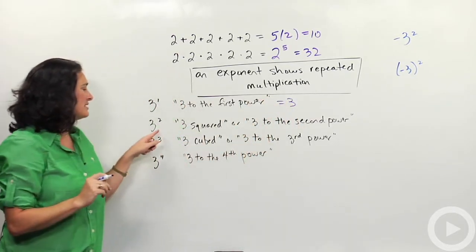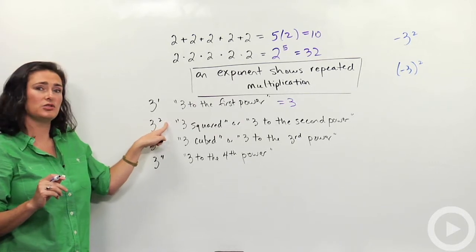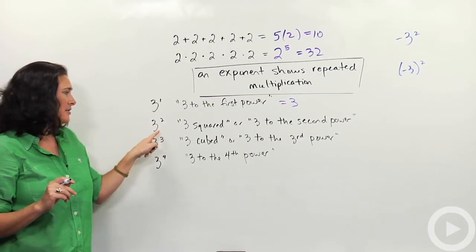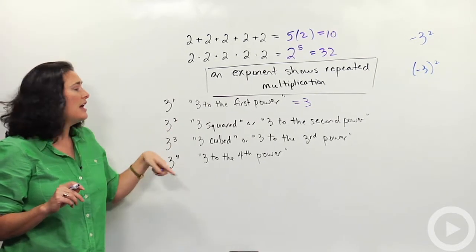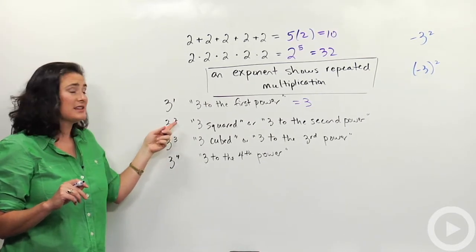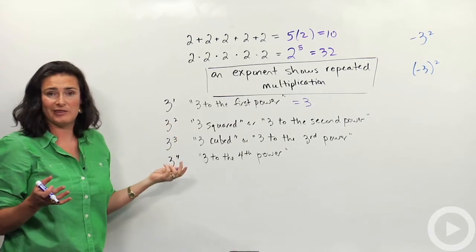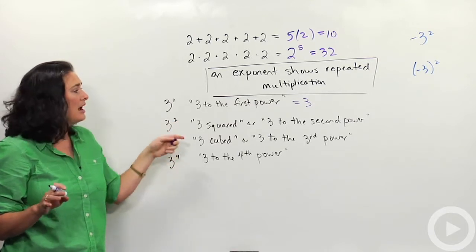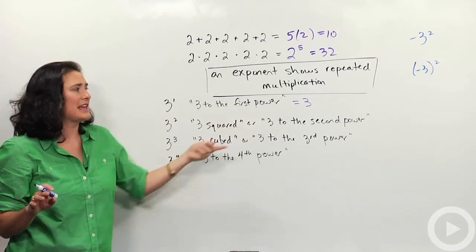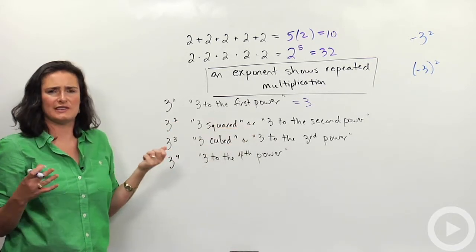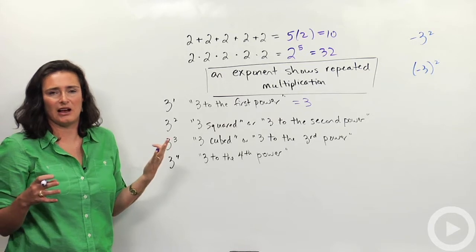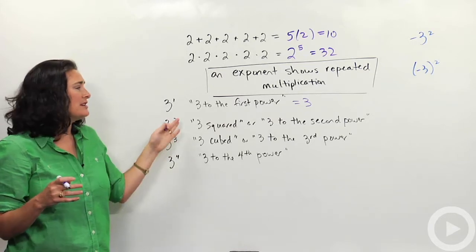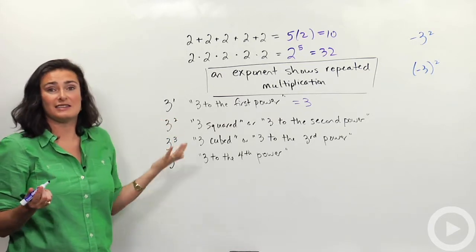Here I have 3 with that little 2 up there. The base number is 3, the exponent is 2. That's called 3 squared — you've probably seen that before. I could also say it as 3 to the second power, although that's a little less common. And 3 squared is 9.